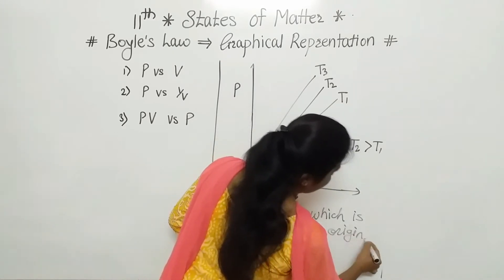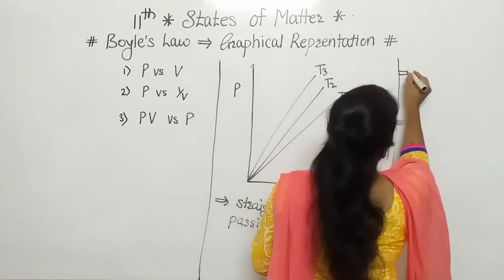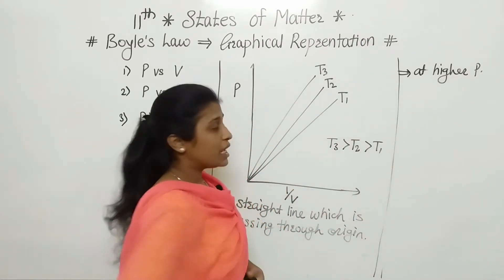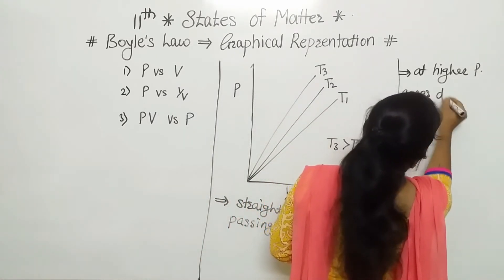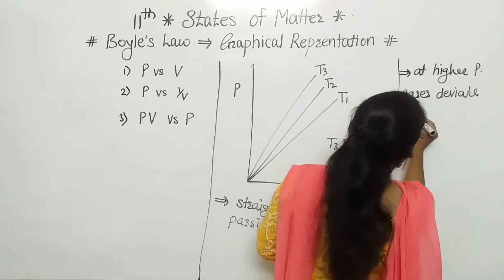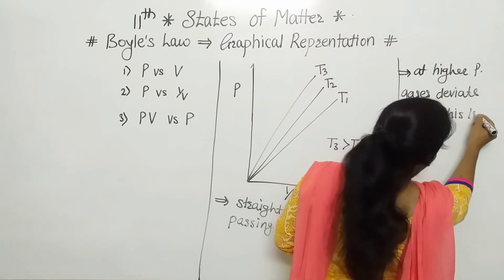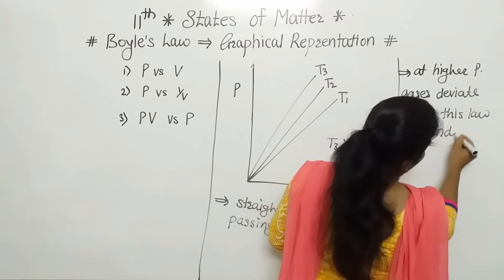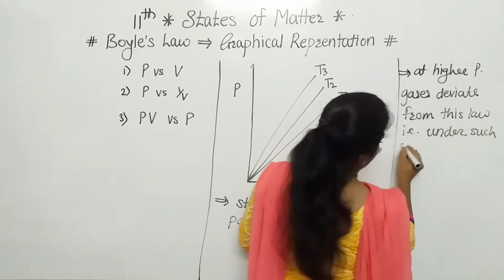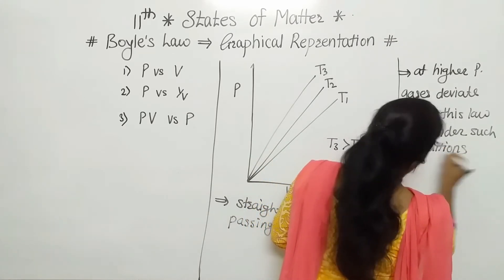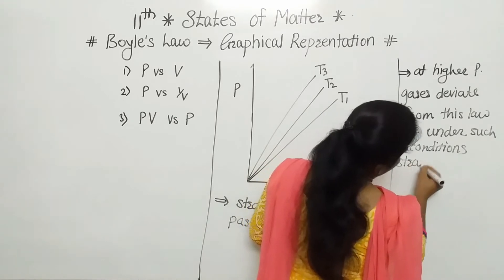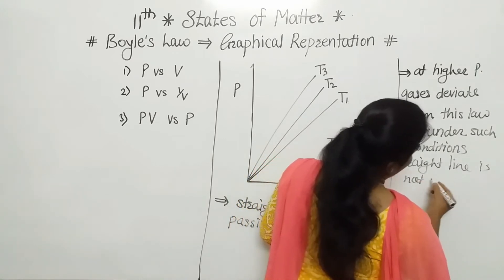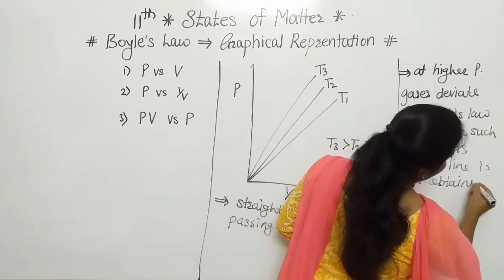Another important point here: at higher pressure, gases deviate from this law. Under such conditions, the straight line is not obtained. So when plotting pressure versus 1/V, we get a straight line through the origin at normal conditions, but at higher pressure we do not get this straight line.